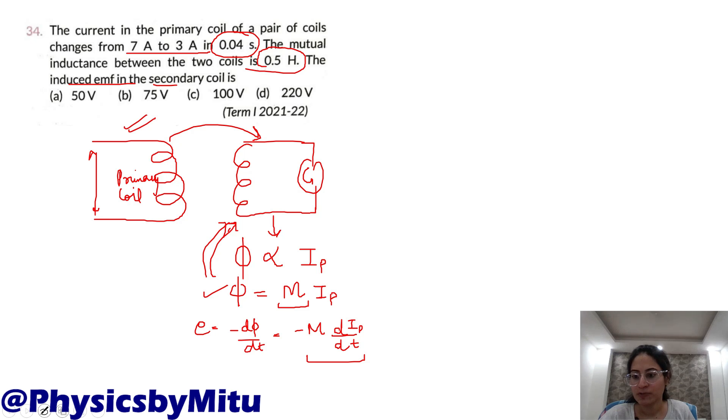Now what is the question? The current changes from 7 ampere to 3 ampere in this coil in 0.04 seconds. Mutual inductance value given is 0.5 henry. You have to find the induced EMF. Put all the values.